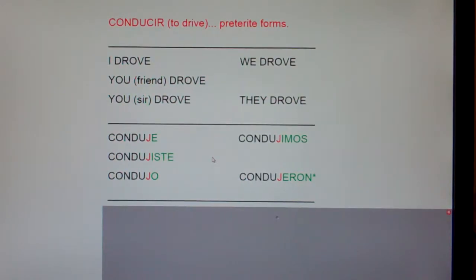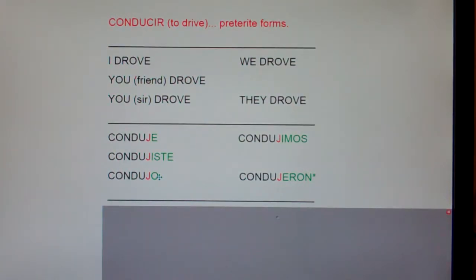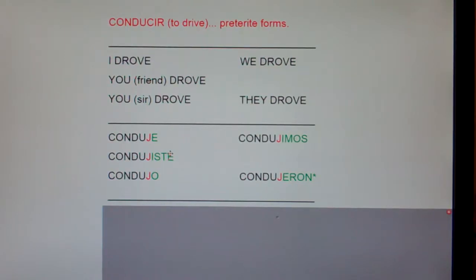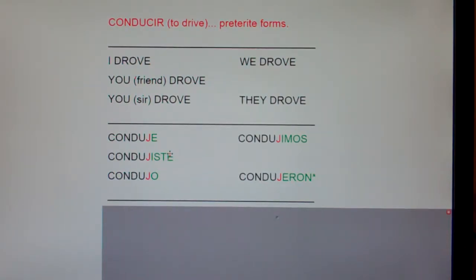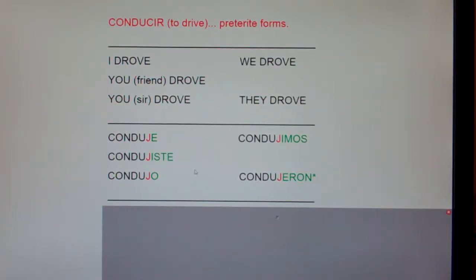Another thing you might have noticed is there's no accent — no accent over the E in the yo form, and no accent on the él form. Some of you are thinking, but Mr. Holt, you said the most important chant in Spanish 2 is: if it ends with an E, it was done by me once with an accent; if it ends with an O, it was done by Joe once with an accent. So why aren't there accent marks? Remember, I also said if it's tricky or irregular in the present tense, then in the past preterite there are no accent marks. Ir, ser, estar, hacer, tener — all of those are tricky and irregular in the present tense, so none of them have accents in the past tense. If it's irregular in the present, it's not going to have accents in the past.